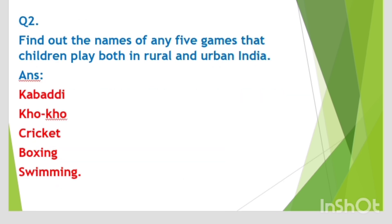Question number two: find out the names of any five games that children play both in rural and urban India. Answer: kabaddi, kho kho, cricket, boxing, swimming.